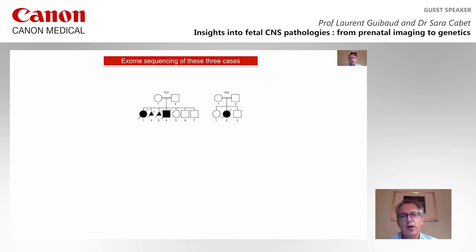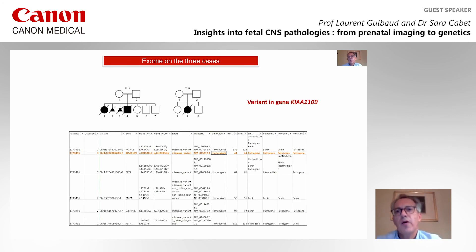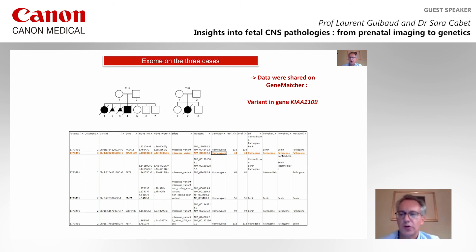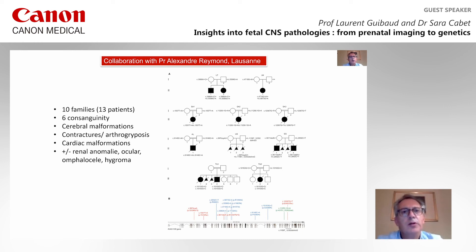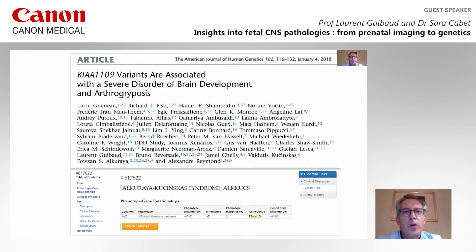So we did exome sequencing of these three cases, and this gave us the finding that we found variants in the gene CHIAAA1109. This data was shared on GeneMatcher, and we collaborated with Professor Alexandre Reymond of Lausanne, who had 10 families — six of them with consanguinity — and all these families had cerebral malformations with contracture and arthrogryposis, cardiac malformation, pulmonary anomalies, ocular anomalies, omphalocele, and hygroma. We published this article on the CHIAAA1109 variants.